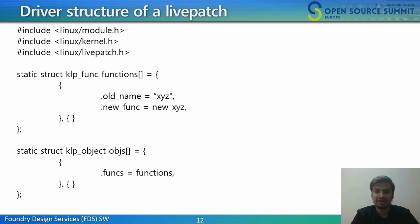The structure includes the name as a string of the original function. The function address is found via kallsyms at runtime. Since we might need to replace more than one function in our livepatch, we can create many of these function mappings since functions is an array. We then tell livepatch what to patch with struct klp_object. struct klp_object defines an array of patched functions (struct klp_func) in the same object, where the object is either vmlinux or a module name. The structure helps to group and handle functions for each object together.